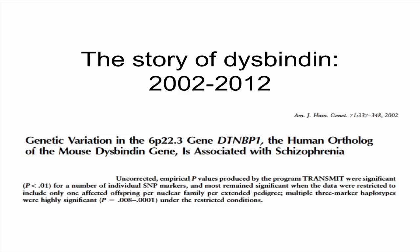There was a report in 2002 — so 10 years ago now — of an association between variation in and around the dysbindin gene, not coding variation, just SNP markers in and around the dysbindin gene, with schizophrenia. If you can read the text from the abstract of that paper, you can see the level of statistical evidence in favor of association to schizophrenia. Single SNPs were significant at slightly less than 0.01.